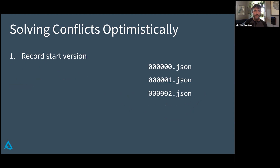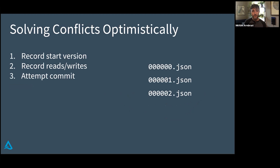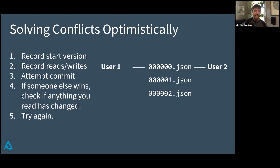When we see that there's a conflict, we start by recording the start version, record any operations that happen, attempt to commit, and if somebody else wins, user two just automatically tries again.